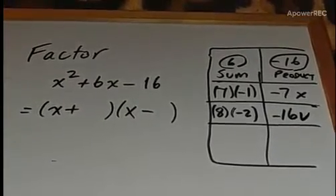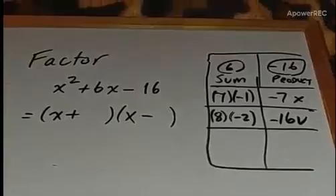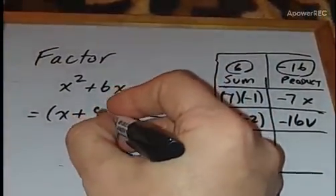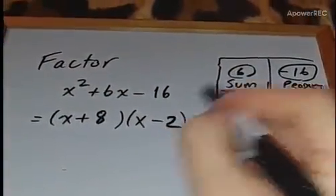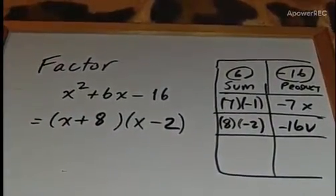So we have two numbers: 8 and negative 2. In this case, we're going to use (x + 8) and (x - 2) as our two binomial pairs.